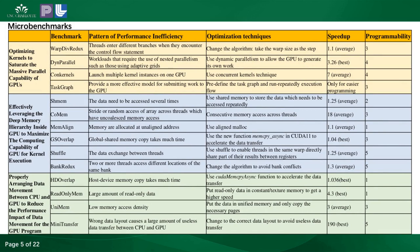As shown in this table, we developed and collected 14 microbenchmarks, referred to as CUDA Microbench, according to the three mentioned guidelines. This table shows the names of the microbenchmarks, the pattern of performance efficiency, the optimization techniques we used, speedup in our experiments, and programmability. Programmability is used to indicate the difficulty of programming for a given optimization — on a scale from 1 to 5, with 5 being most difficult.